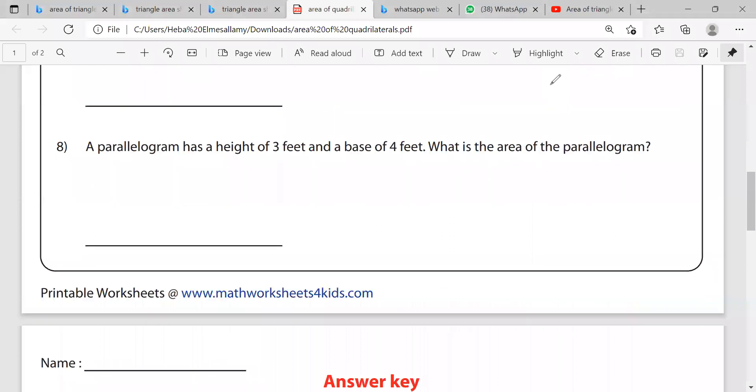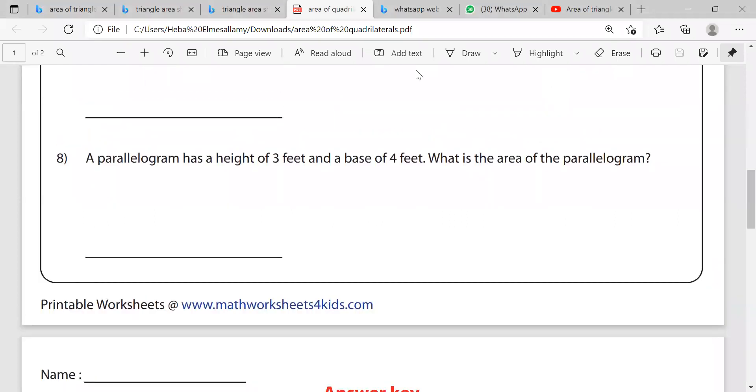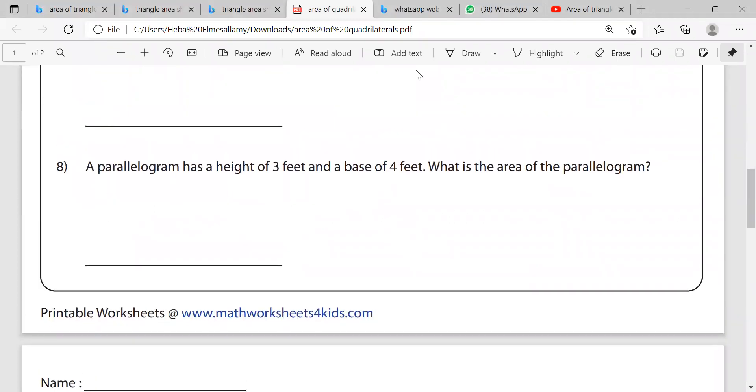Question eight. A parallelogram has a height of 3 feet and a base of 4 feet. What is the area of a parallelogram? It's very simple. Area of parallelogram is base multiplied by height. So it's 3 multiplied by 4, which is 12 feet squared.